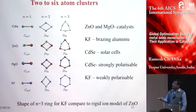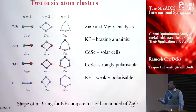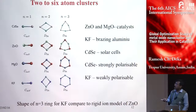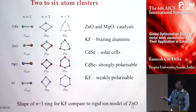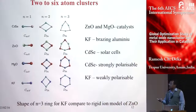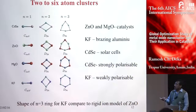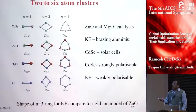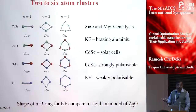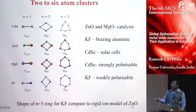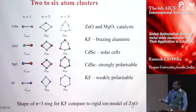I will present results on zinc oxide, potassium fluoride clusters, cadmium sulfide clusters, and magnesium oxide. Zinc oxide and magnesium oxide are important in catalysis. Potassium fluoride is used as a brazing agent in aluminum, and cadmium sulfide is used in solar cells. An important characteristic is that cadmium sulfide is strongly polarizable, potassium fluoride is weakly polarizable, and zinc oxide and magnesium oxide are in between.